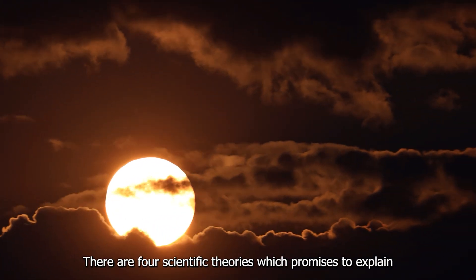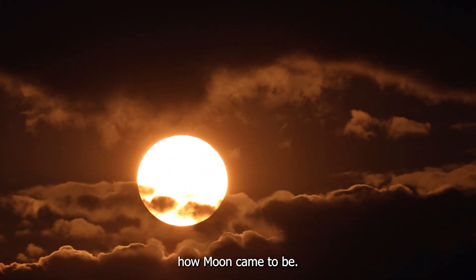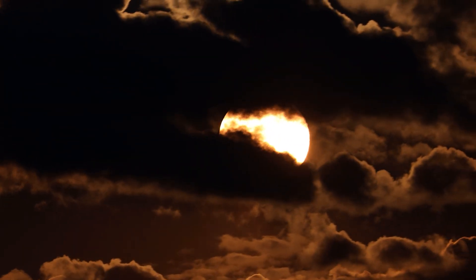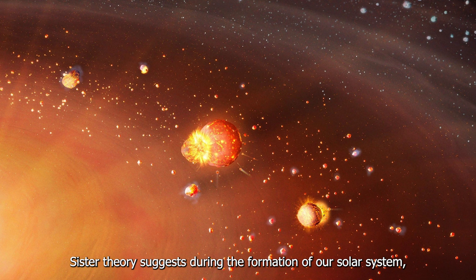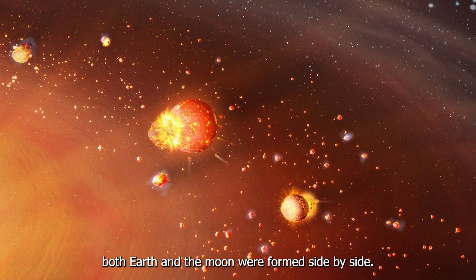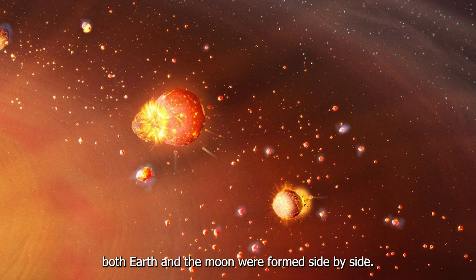There are four scientific theories which promise to explain how the Moon came to be, such as the sister theory. Sister theory suggests during the formation of our solar system, both Earth and the Moon were formed side by side.